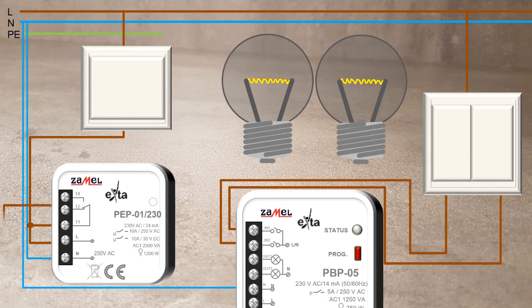Normally open output which is terminal 12 of PEP01-230 will be in the OFF state and will power the PBP05 relay by the terminal L. Terminal 12 connect to the L input of the PBP05 relay.